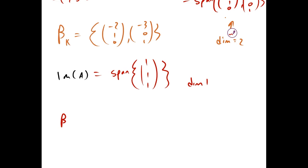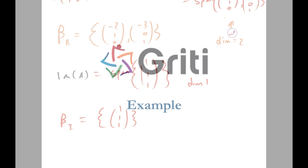And to find the basis for the image, we would just say 1, 1, 1. So, that's it for kernel and image.